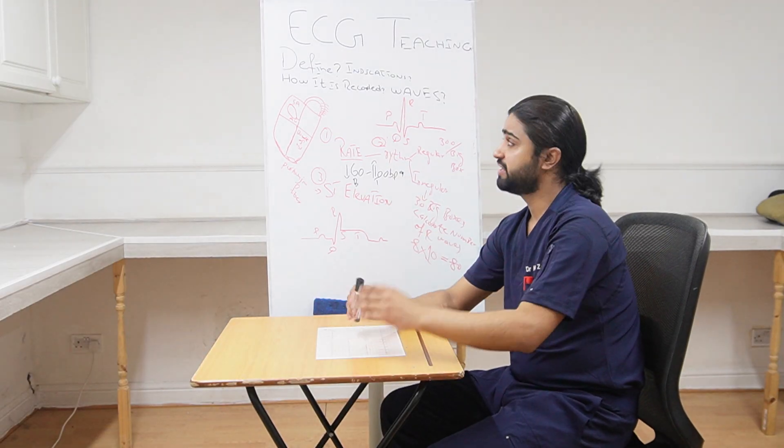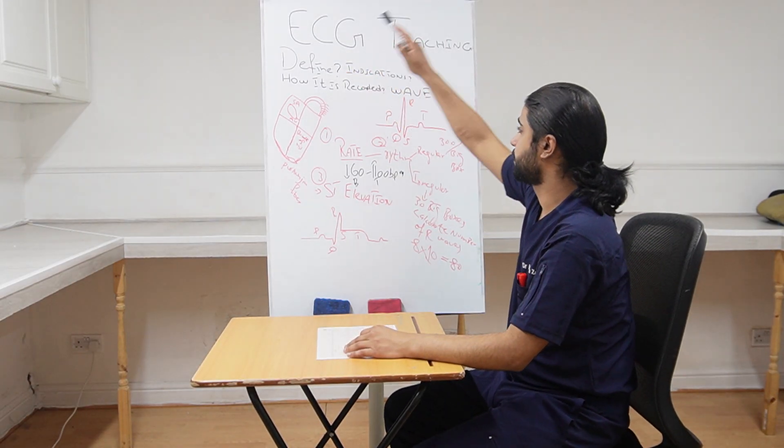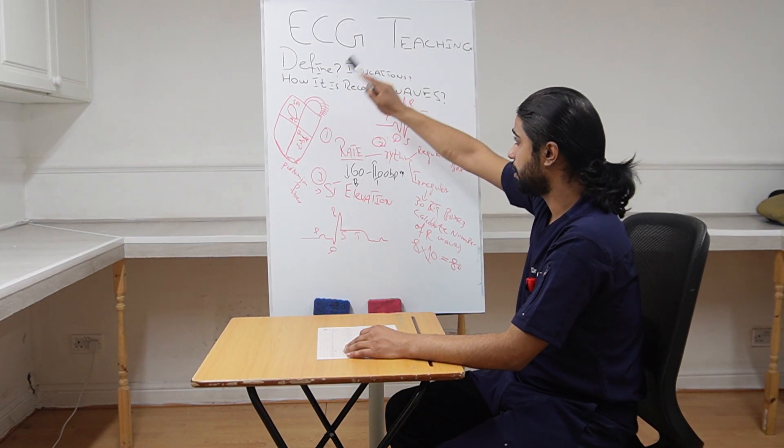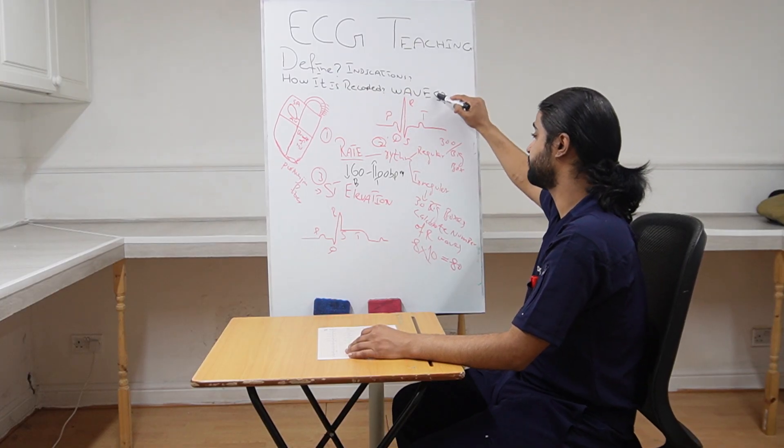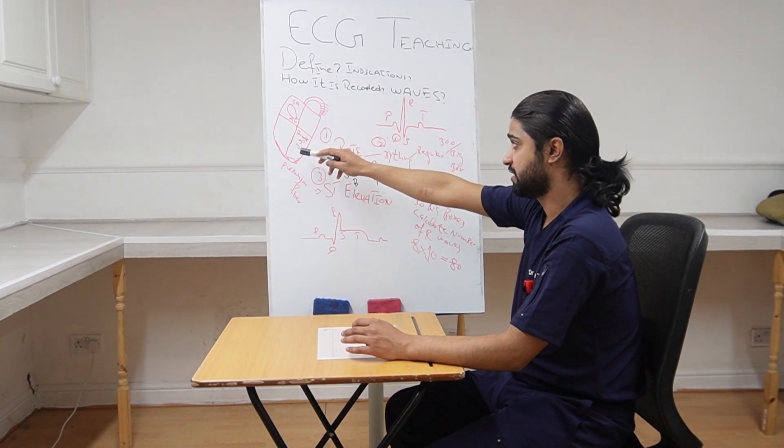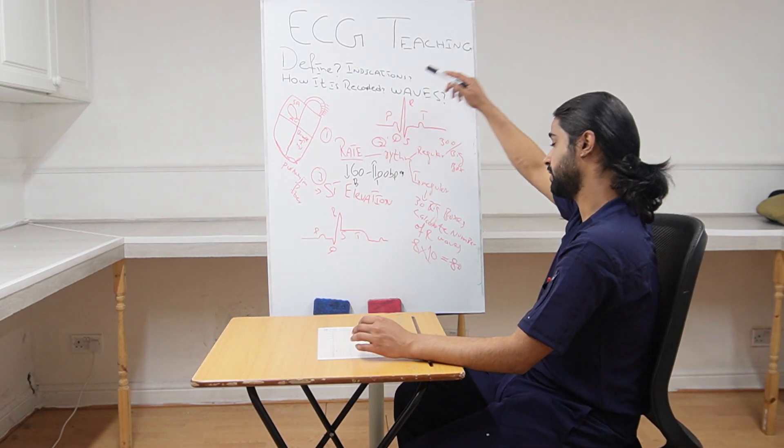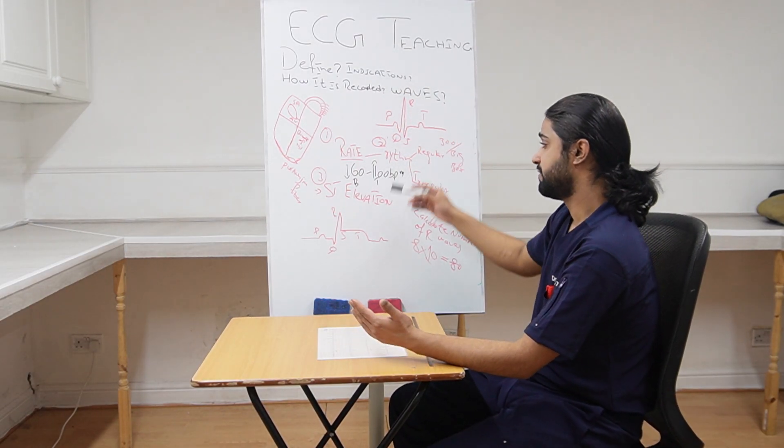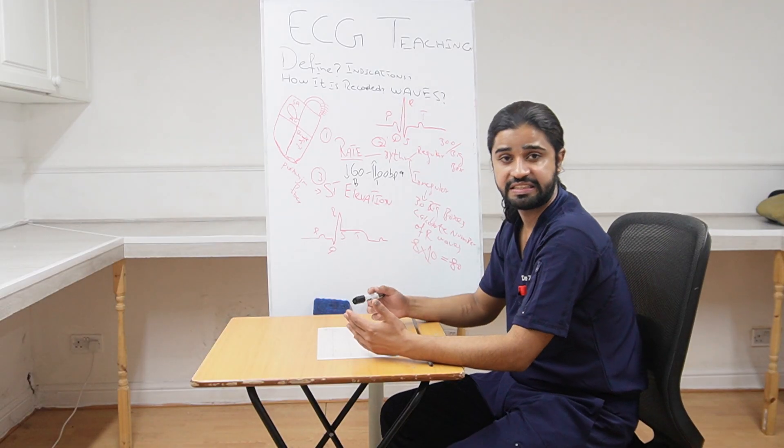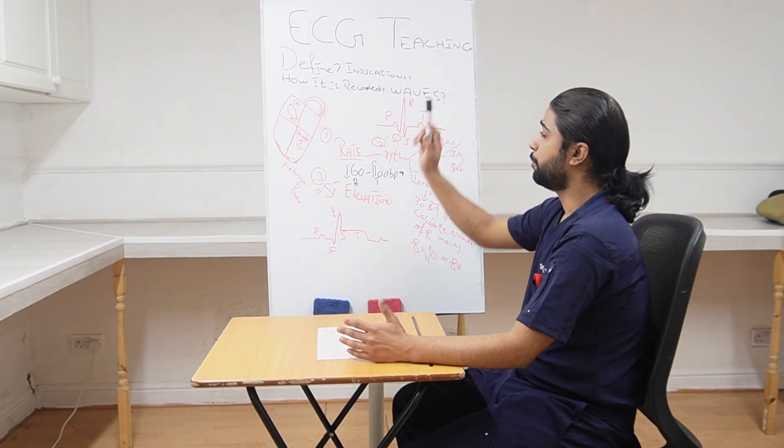We need to explain the student what is ECG, why we do ECG, how it is recorded, how the waves form, a bit about the conduction system of the heart as well, how rate is recorded, how rhythm is recorded and if there is any other abnormality like ST elevation.